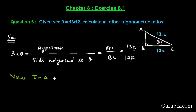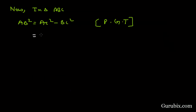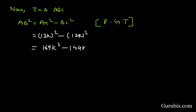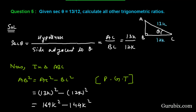In triangle ABC, we shall find AB using the Pythagorean theorem: AB² = AC² − BC². AC is 13K and BC is 12K, so AB² = 169K² − 144K² = 25K². Therefore AB equals 5K.